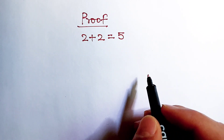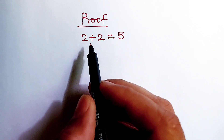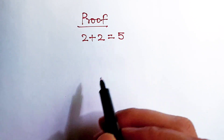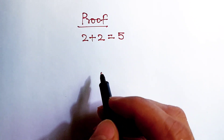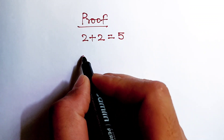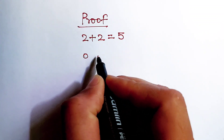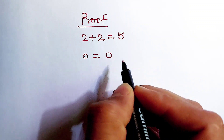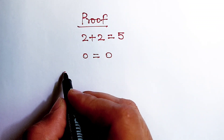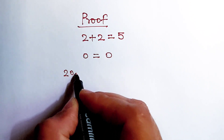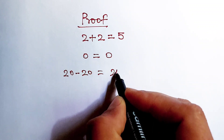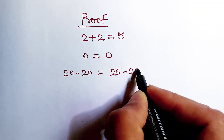Hello friends, here is the question: we have to prove 2 plus 2 equals 5. Let's do it. First of all, we can write 0 equals 0. Now this 0 can be written as 20 minus 20, which equals 25 minus 25.